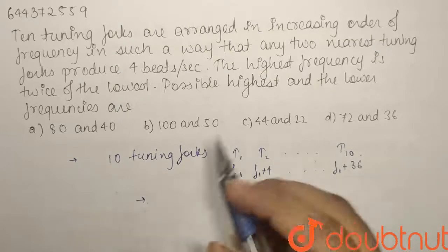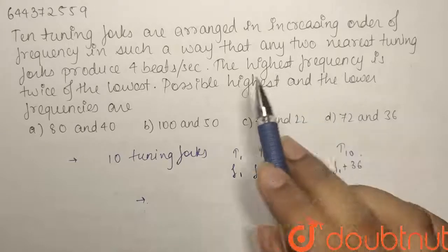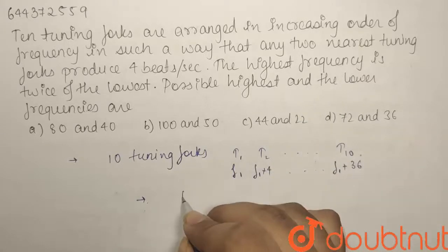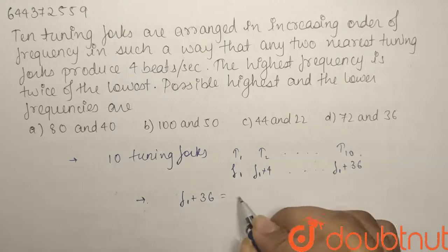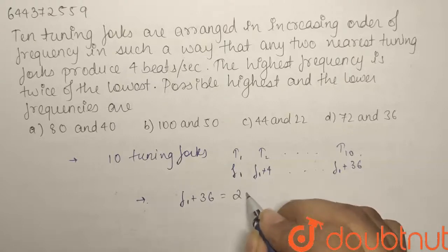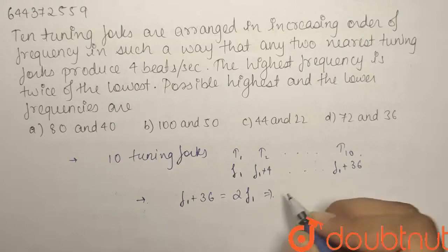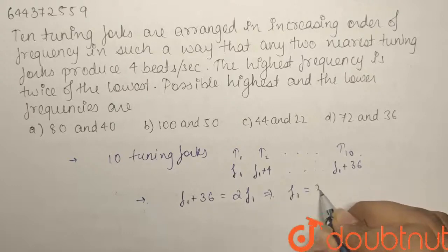So the next data that is given is the highest frequency is twice the lowest. So here the highest frequency is F1 plus 36, and it is twice of the lowest frequency, that is F1. So from here solving, we get F1 comes out as 36.